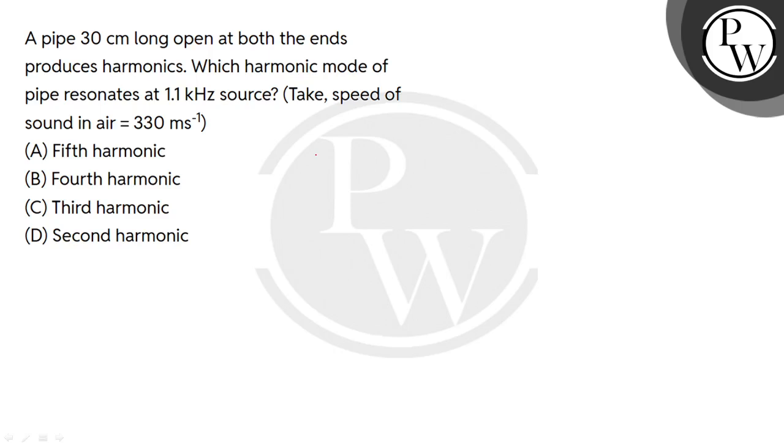Hello Vacher, it's Reddick. Question: A pipe 30 cm long, open at both ends, produces harmonics. Which harmonic mode of the pipe resonates at 1.1 kHz source? Take the speed of sound in air as 330 m/s. So we are given an open organ pipe.